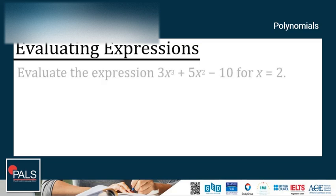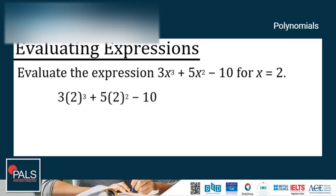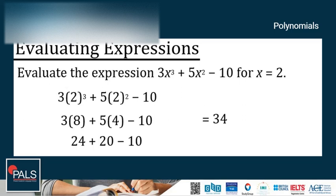Let's try an example. Evaluate the expression 3x³ + 5x² - 10 for x = 2. To evaluate the expression, let us simply replace each x in the term with a 2 and then compute. Be sure to follow the order of operations. So we start with the exponent, and then multiplication, then addition and subtraction. And the final answer is equals to 34.